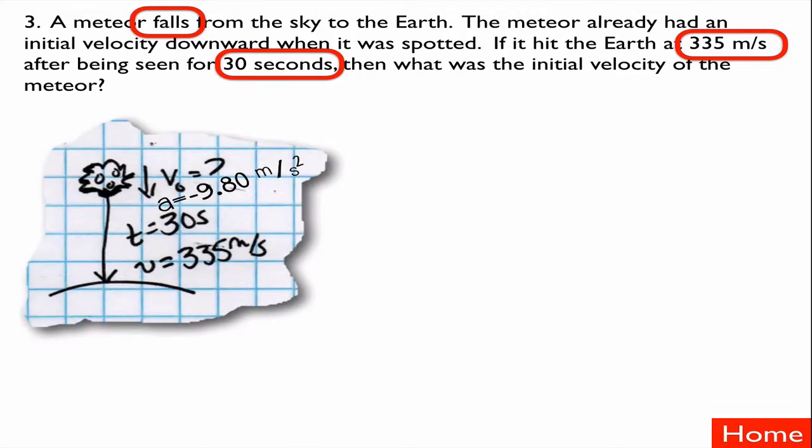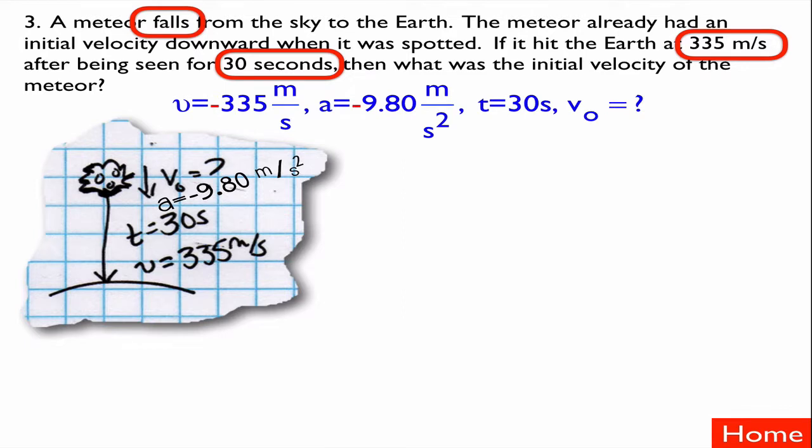I drew a diagram showing my unknown initial velocity, my acceleration, time, and final velocity — located at the beginning and end of the story in the picture. Then my list of givens: final velocity is negative 335 meters per second because it's going down when it hits. Acceleration is negative 9.8 meters per second squared because it's going down. Time is 30 seconds. And the initial velocity is what I'm looking for.